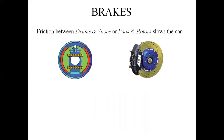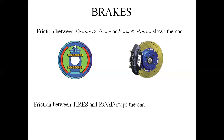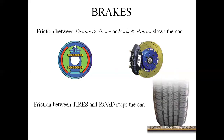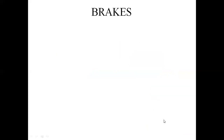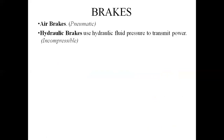This diagram shows the drum brake and the disc brake. Friction between tires and roads also stops the car. The drum shoe, brake pads and rotors, and tire-to-road friction are all shown here. Air brakes use air as the working media, and hydraulic brakes use hydraulic fluid as the working media to transmit pressure.